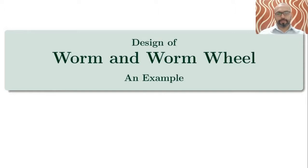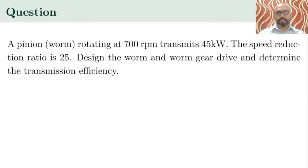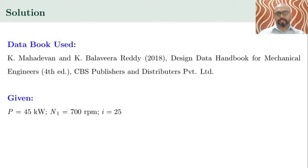Hello, good day. Today we will be discussing the design of a WAM and WAMBIT. An example problem will be solved in this class. A pinion or WAM rotating at 700 rpm transmits 45 kilowatts; the speed reduction ratio is 25. We will design the WAM and WAM gear drive and determine the transmission efficiency. This problem will be solved using the data book prepared by K. Mahadevan and K. Balavirar Reddy.